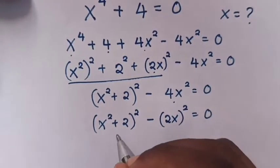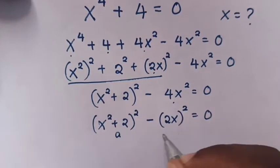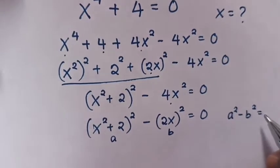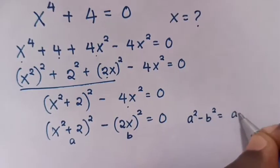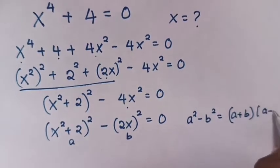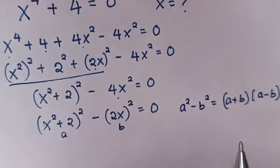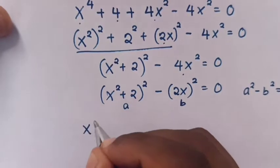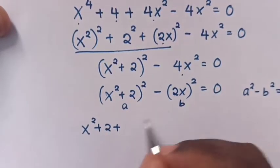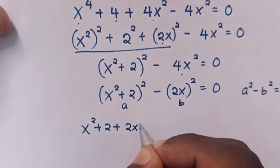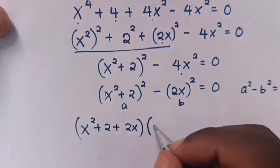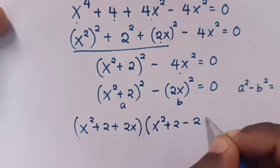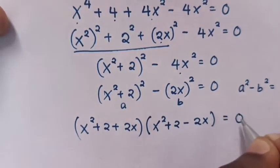Now, from this equation, we let A equal (x² + 2) and this part B equal 2x. So we apply the formula A² minus B² equals (A + B)(A − B). When we apply this formula, our equation will be (x² + 2 + 2x) times (x² + 2 − 2x) equals 0.